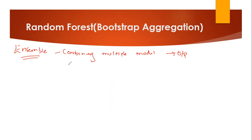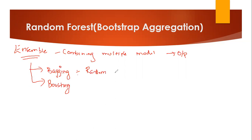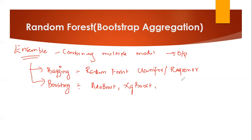In ensemble, multiple models are grouped and may be added sequentially or in parallel, but the computation of each and every model is important. There are basically two different techniques in ensemble: one is bagging and the second is boosting. The best example of bagging is Random Forest classifier or regressor. In boosting, you have AdaBoost, XGBoost (Extreme Gradient Boosting), and Gradient Boosting.